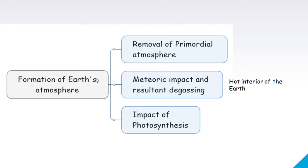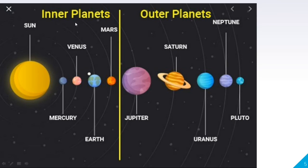This is the removal of the primordial atmosphere — Stage 1, Stage 2, Stage 3. This is the solar system. This is the asteroid belt. This is the terrestrial planet. This is the gaseous planet.